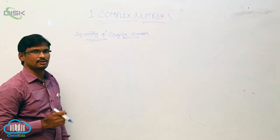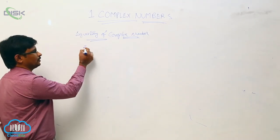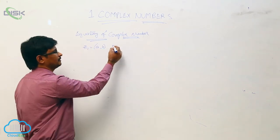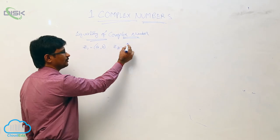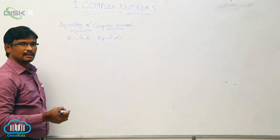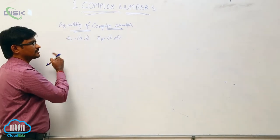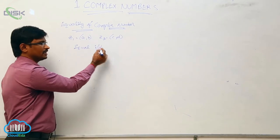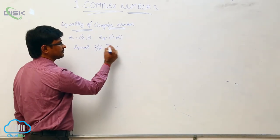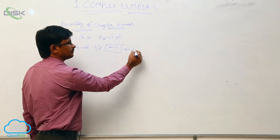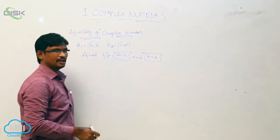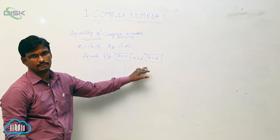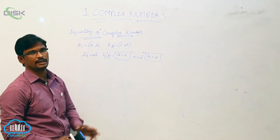We will see the equality of complex numbers definition. Let two complex numbers be considered: Z1 equal to A comma B, and Z2 equal to C comma D. Then these two complex numbers are said to be equal if and only if A equal to C and B equal to D. That is, the corresponding elements of the complex numbers should be equal. That is the definition of equality of complex numbers.